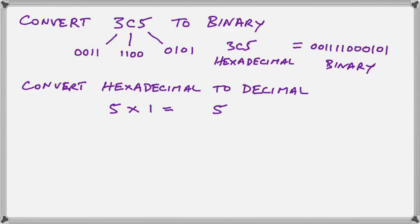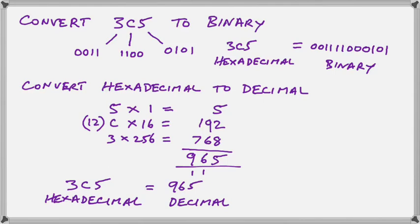But when we want to convert hexadecimal to decimal, we now have to take each hexadecimal digit and multiply by its respective power of 16. So we would have 5 by 1, C is 12 by 16, then we would have 3 by 256.